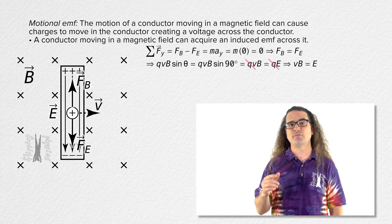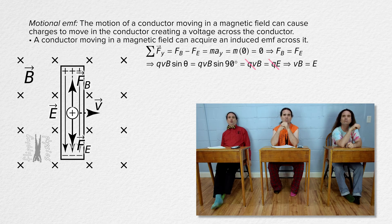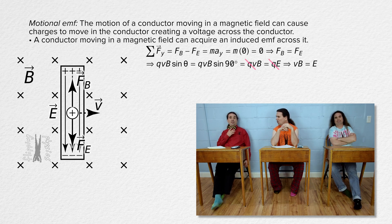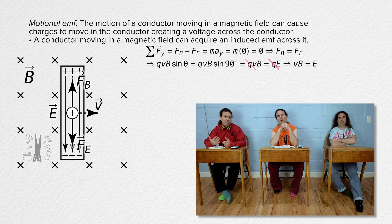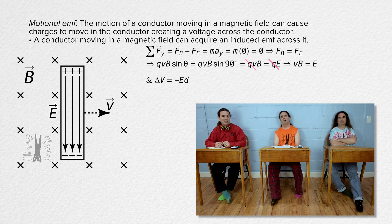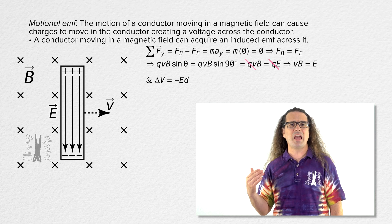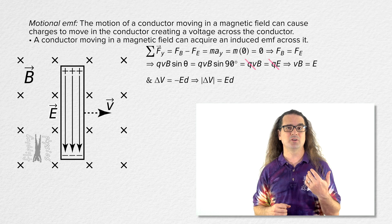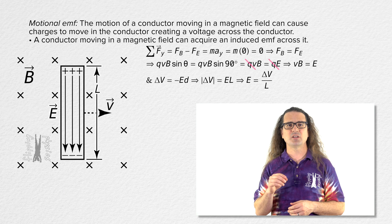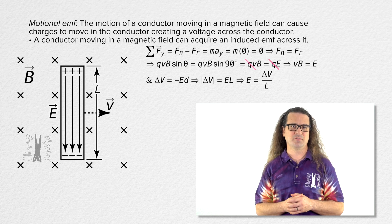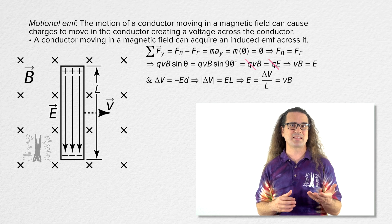Bobby, what is the equation for the voltage across a uniform electric field? We derived the equation for the electric potential difference between two parallel plates, and two parallel plates of opposite charge create a uniform electric field — basically what we have here. The voltage across a uniform electric field equals the negative of the electric field times d, the distance between the plates. Using the absolute value and letting the length of the conductor be capital L, we get that the electric field equals the voltage divided by L, which also equals the velocity of the conductor times the magnetic field.